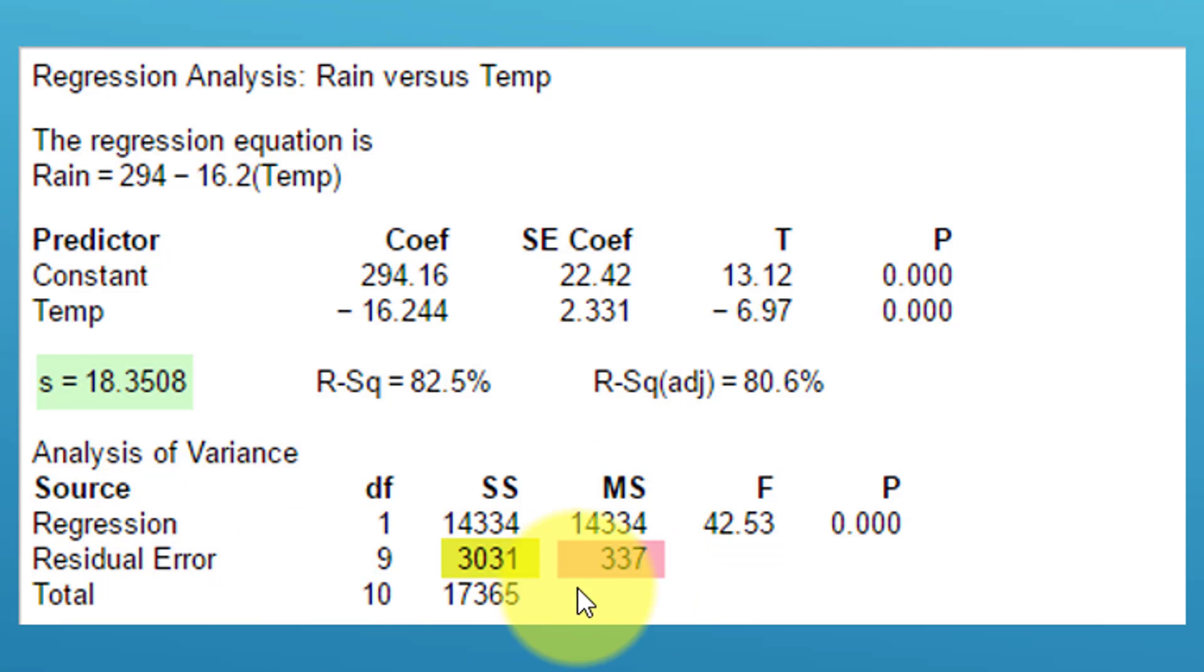It gives you the sum of square error SSE in the printout. Next to it in pink is mean square error. Mean square error MSE is the same thing as the variance, which is s-squared. The standard deviation or standard error of the model is just the square root of this number, like it is with every variance and standard deviation. They give you that up here in this row as s, 18.3508, which is the square root of 337.